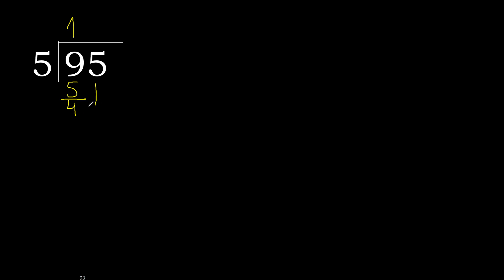Next: 45. 5 multiplied by 9 is 45 — exact, it is not greater. 45 minus 45 is 0.